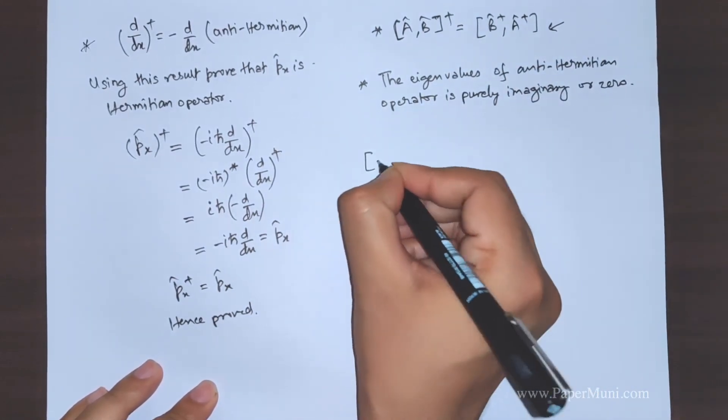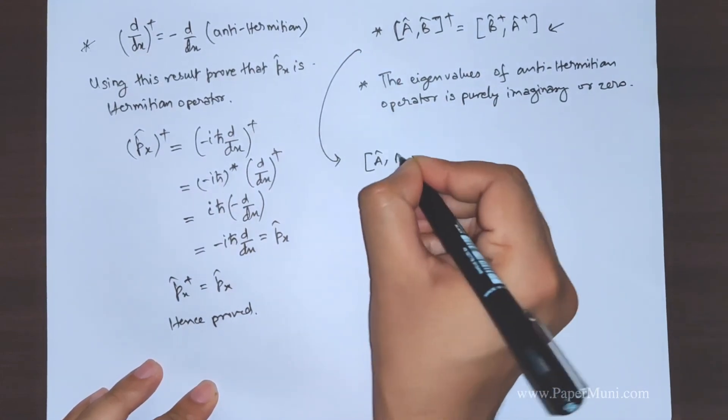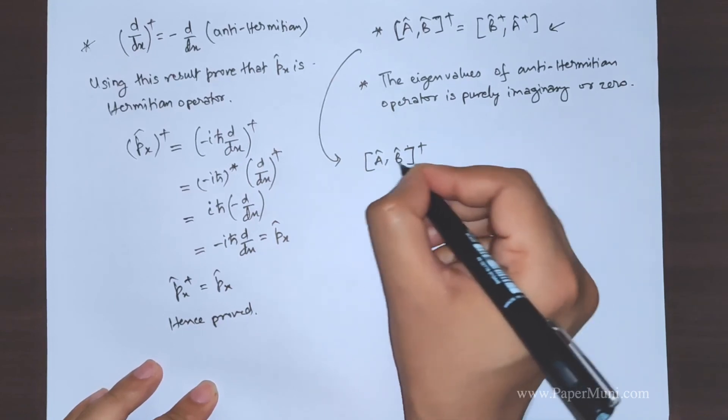If you want me to do it, I'll do it right now. This is, we are just proving this thing, the commutator of a and b operator.